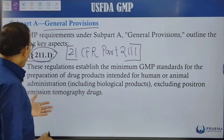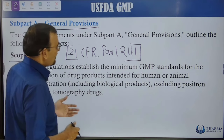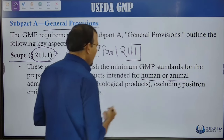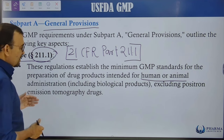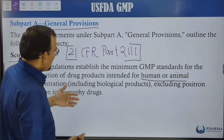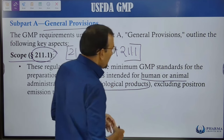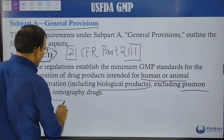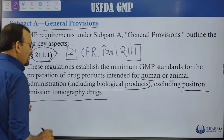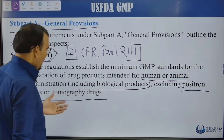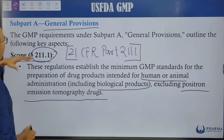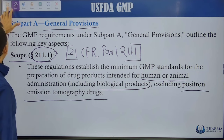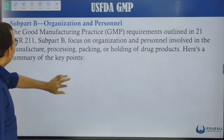This section states that these regulations establish the minimum GMP standards for the preparation of drug products intended for human or animal use, including biological products such as proteins and peptides, but excluding Positron Emission Tomography (PET) drugs. PET drugs are excluded from 21 CFR Part 211 as far as manufacturing is concerned.